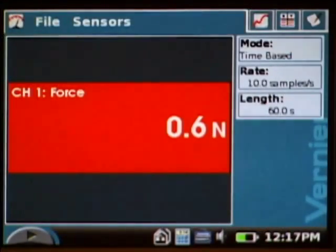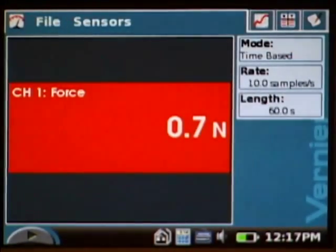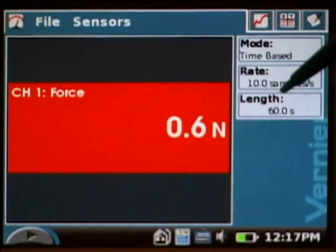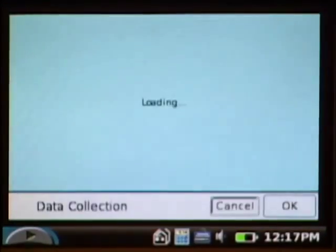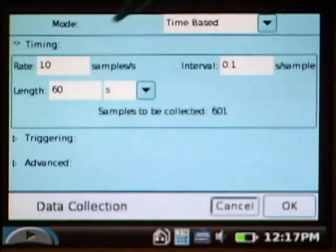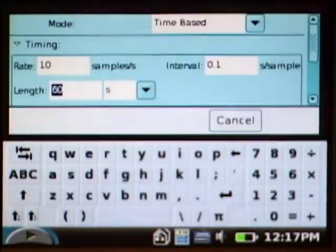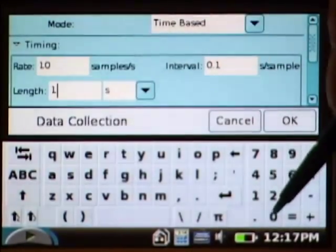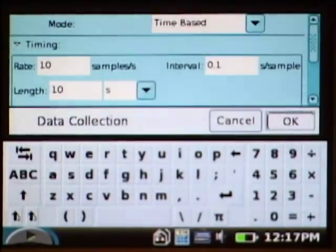In this case, the software set itself up to do a graph for 60 seconds, but this particular activity calls for a graph of only 10 seconds. To change it, I just tap on the word length, and then change the experiment length from 60 to 10, and tap OK.